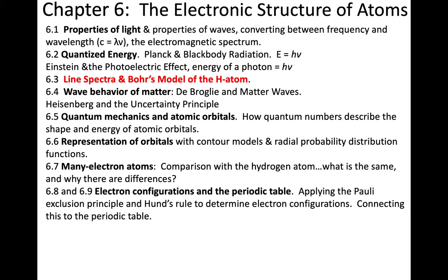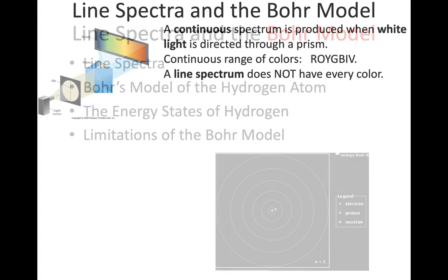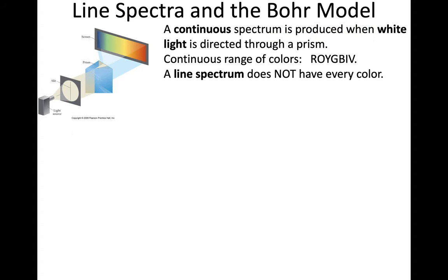When it comes to line spectra and Bohr's model of the hydrogen atom, we did quite a bit with Bohr's model. We considered the phenomena of line spectra, looked at the model itself, the various energy states, and considered limitations of the model. Beginning first with the line spectra, we had the idea that you could have white light, which gives you a continuous spectrum, ROYGBIV, all the colors of the rainbow. A line spectrum does not have every color.